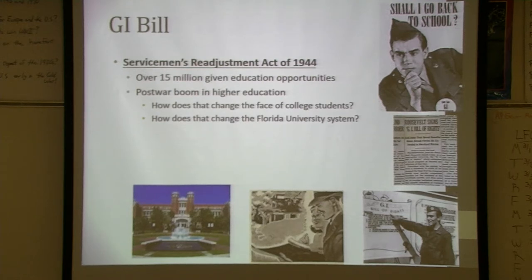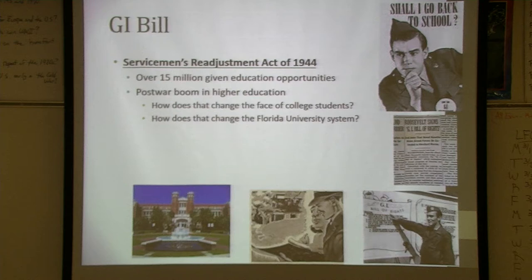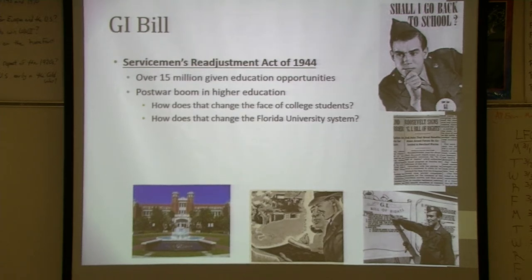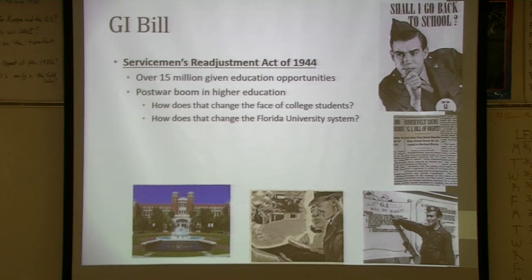For the Florida University System, from 1905 until after World War II, we had three state universities: the segregated Florida A&M in Tallahassee, Florida State College for Women in Tallahassee, and the University of Florida for Men in Gainesville. After so many men came back, we ended up making Florida State and University of Florida co-educational. For Florida State, we now had men and women attending.